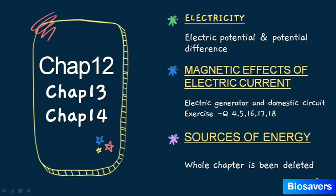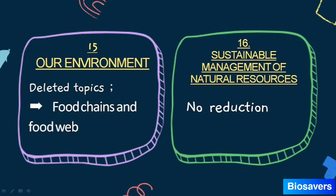Chapter 14 — Sources of Energy — has been completely deleted; we do not need to study it at all. So Chapters 7 and 14 are the two fully deleted chapters. In Chapter 15 — Our Environment — the deleted topics are food chains and food web.